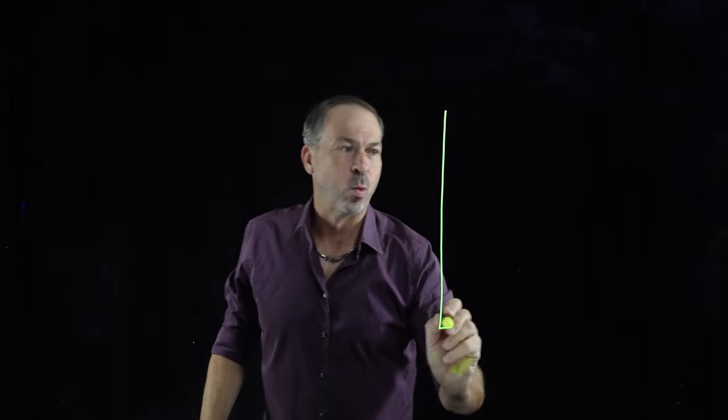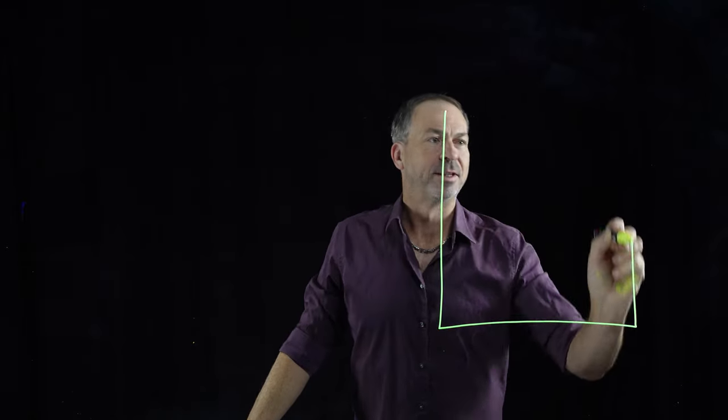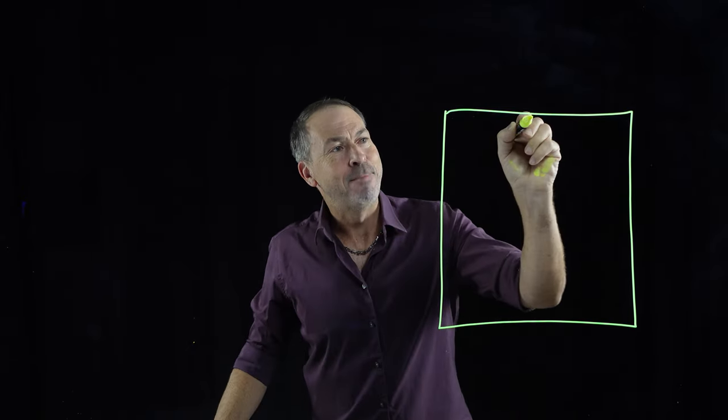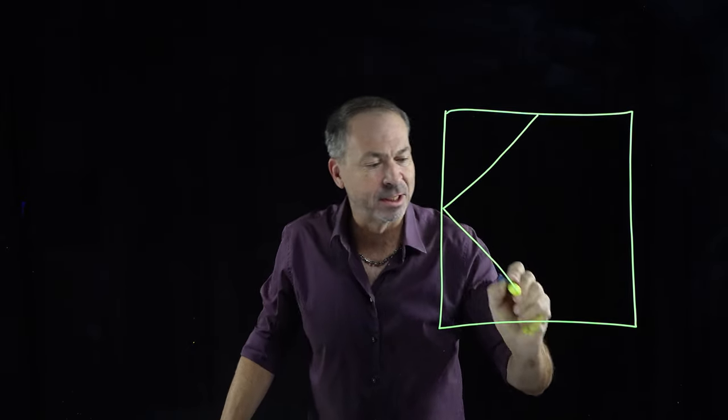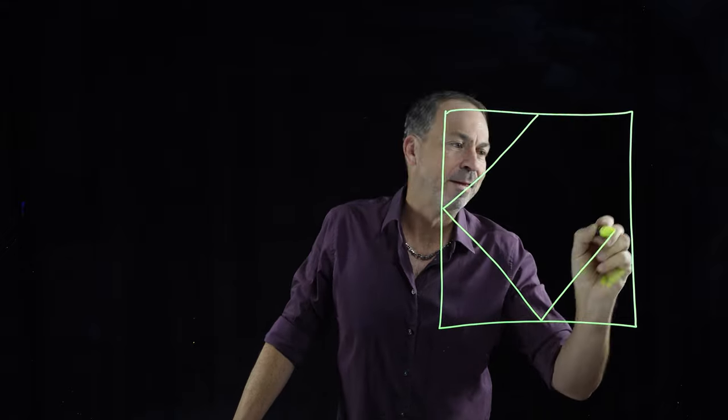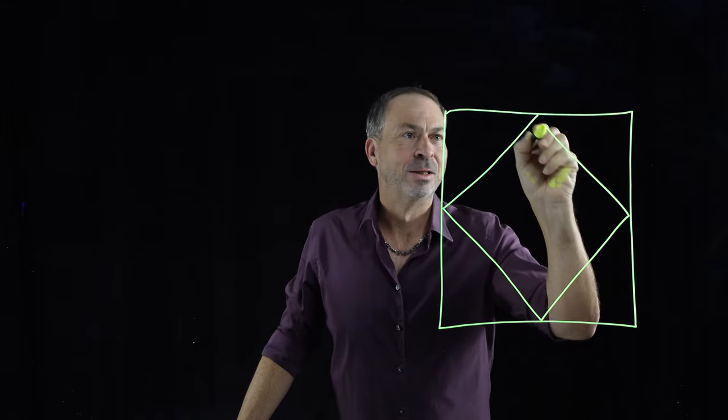G'day! I recently posted the following puzzle on Twitter. Start by drawing a great big one by one square — a square of area one. Now connect the midpoints of its sides to make a tilted square within that square.